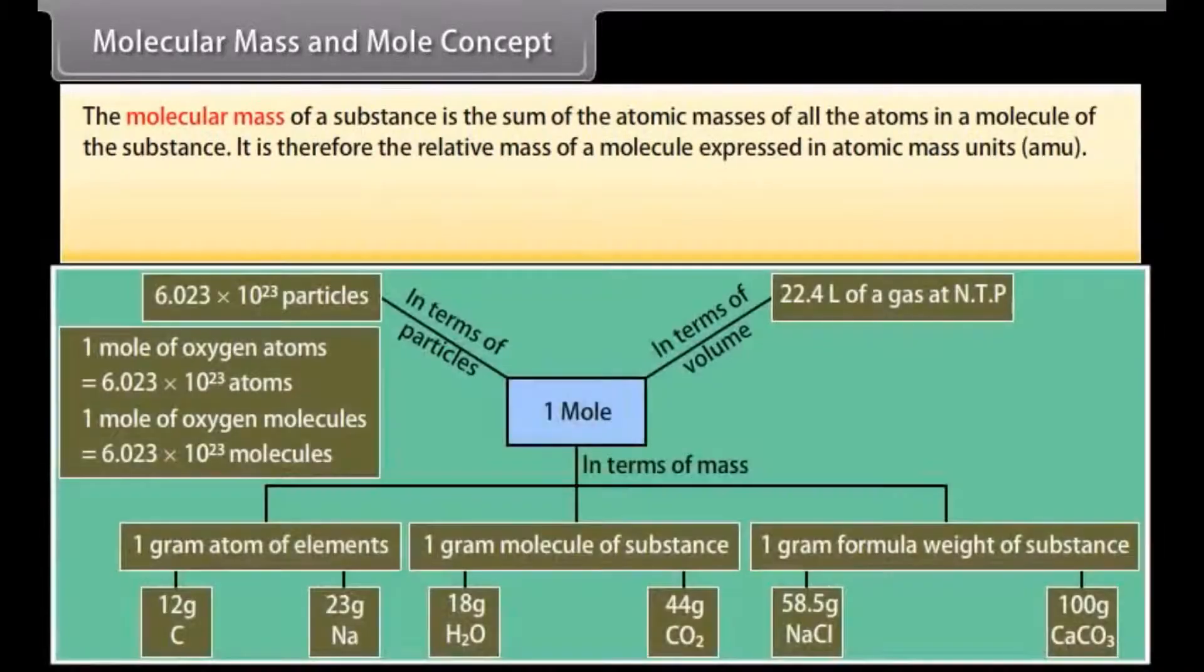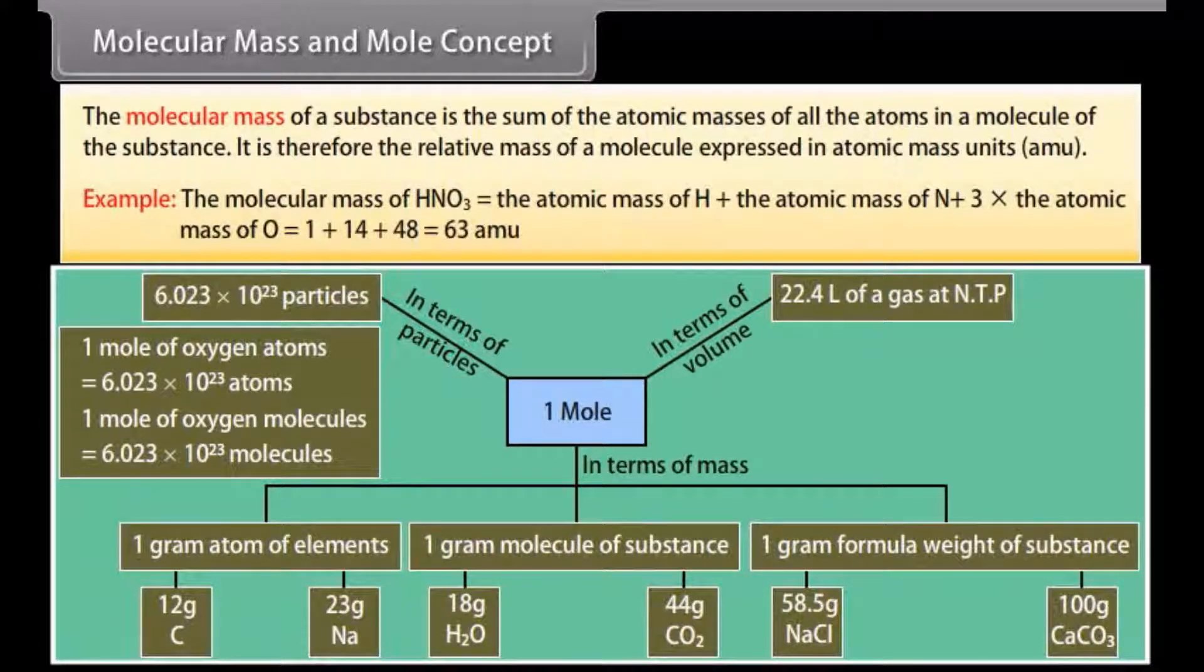Molecular mass and mole concept: The molecular mass of a substance is the sum of the atomic masses of all the atoms in a molecule of the substance. It is therefore the relative mass of a molecule expressed in atomic mass units. Example: The molecular mass of HNO3 is equal to the atomic mass of H plus the atomic mass of N plus 3 times the atomic mass of O, which equals 1 plus 14 plus 48, which equals 63 units.